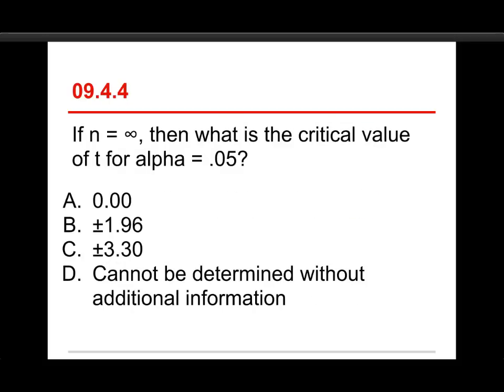All right, number four. If n is equal to infinity, if you have an infinite sample size, then what's the critical value of t for alpha equals 0.05? The choices are zero, plus or minus 1.96, plus or minus 3.30, or it can't be determined without additional information. Well, truthfully, I should be saying that it's a two-tailed test. But the answer here is 1.96.